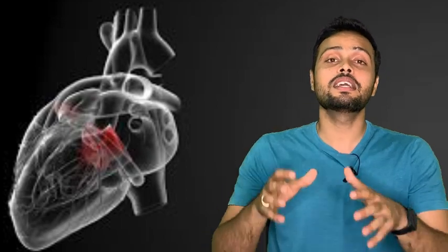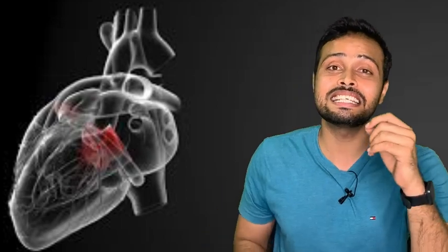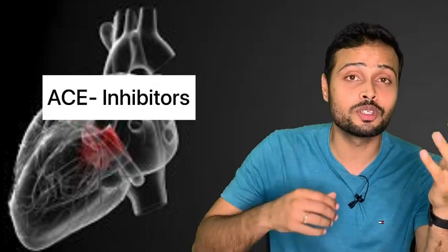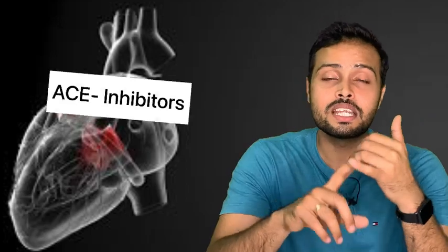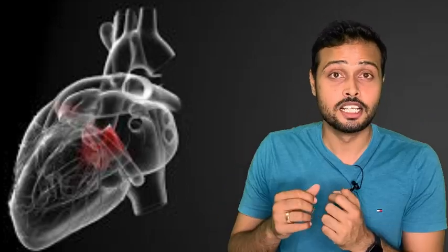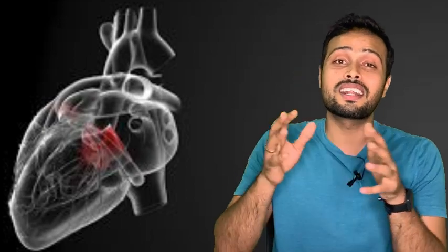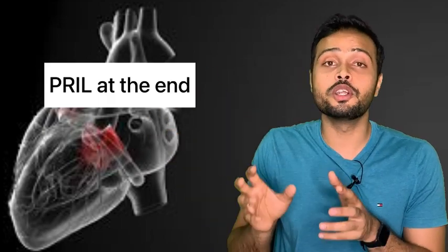The next common medicine taken by cardiac condition patients is ACE inhibitors, also known as angiotensin converting enzyme inhibitors. Drugs like lisinopril or ramipril — drugs which end with '-pril' — are going to be your ACE inhibitors.